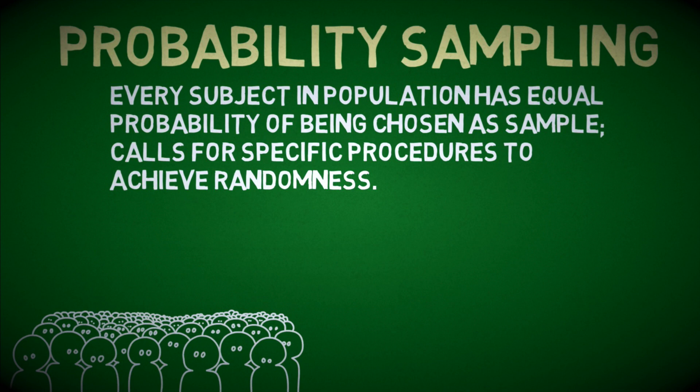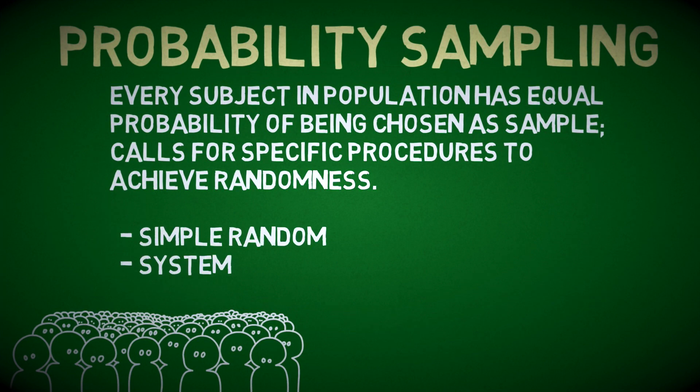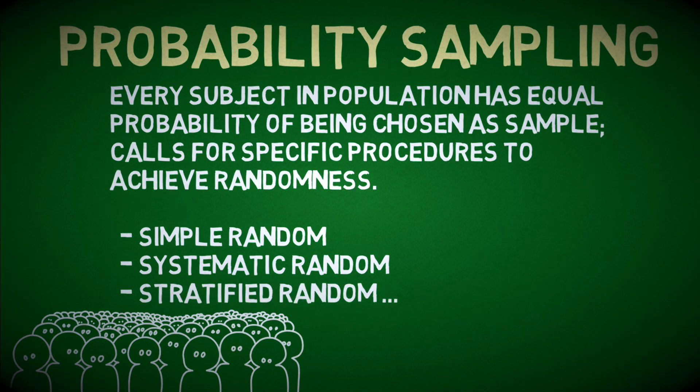There are various probability or random sampling procedures, like simple random, systematic random, or stratified random, etc. What one would notice in all those procedures is that they are all strictly designed and performed so as to achieve randomness. I will link another video here in which I talked about probability versus non-probability sampling methods.